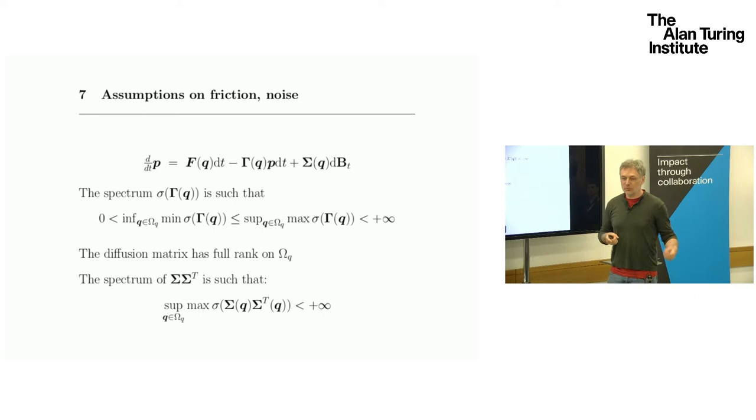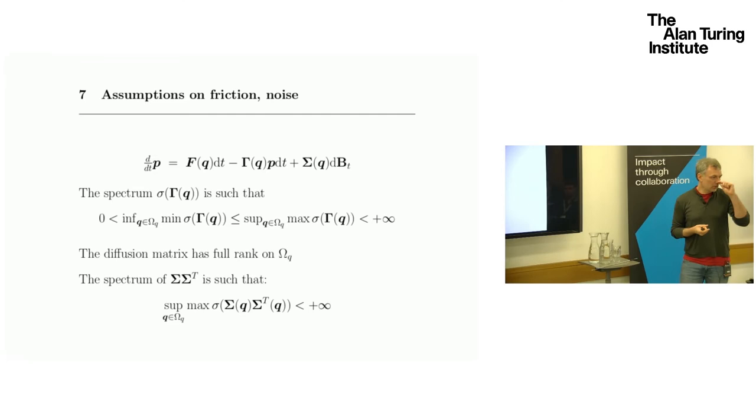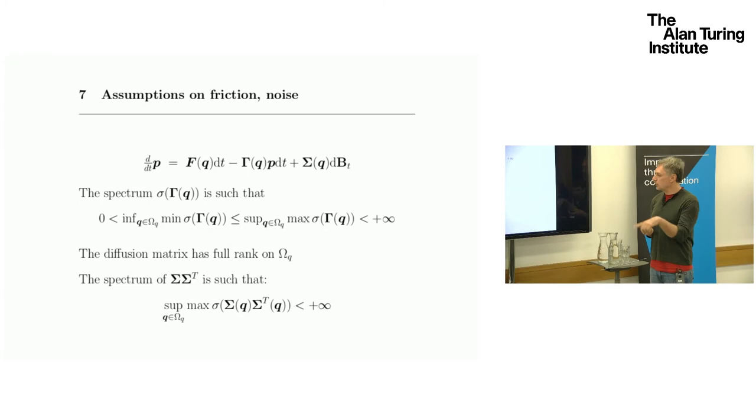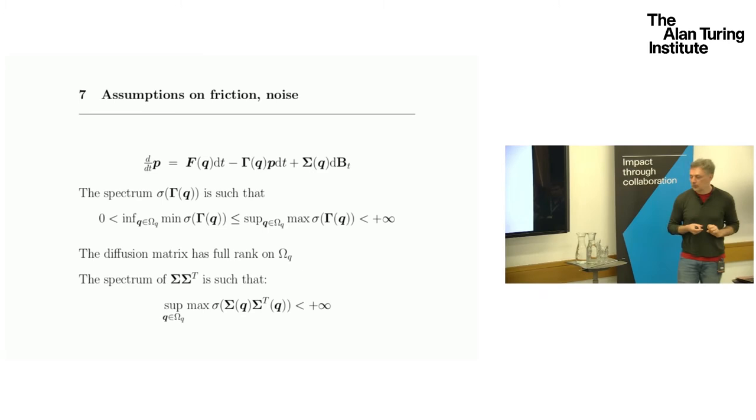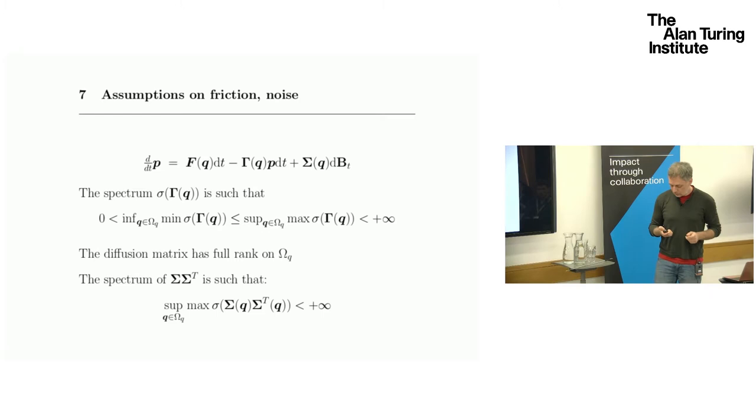Infinite friction intuitively is not very good. You could get trapped somewhere. If you have zero friction, then you may actually be too fast, I guess. The diffusion matrix, the noise part is full rank. We're also going to assume that the noise doesn't go unboundedly on your position space.